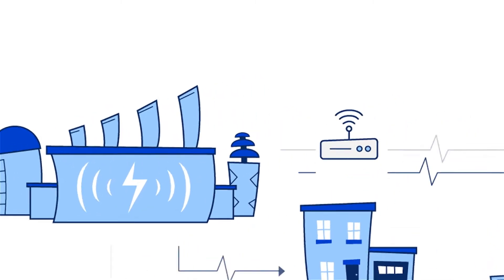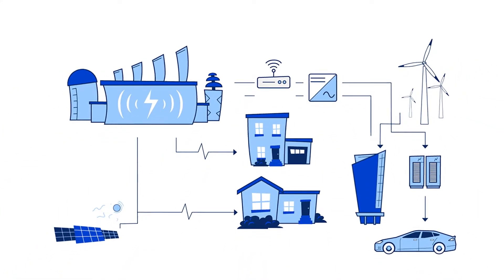Utilities use smart technologies to keep the modern grid safe and reliable to prevent issues from arising and recover quickly when they do.